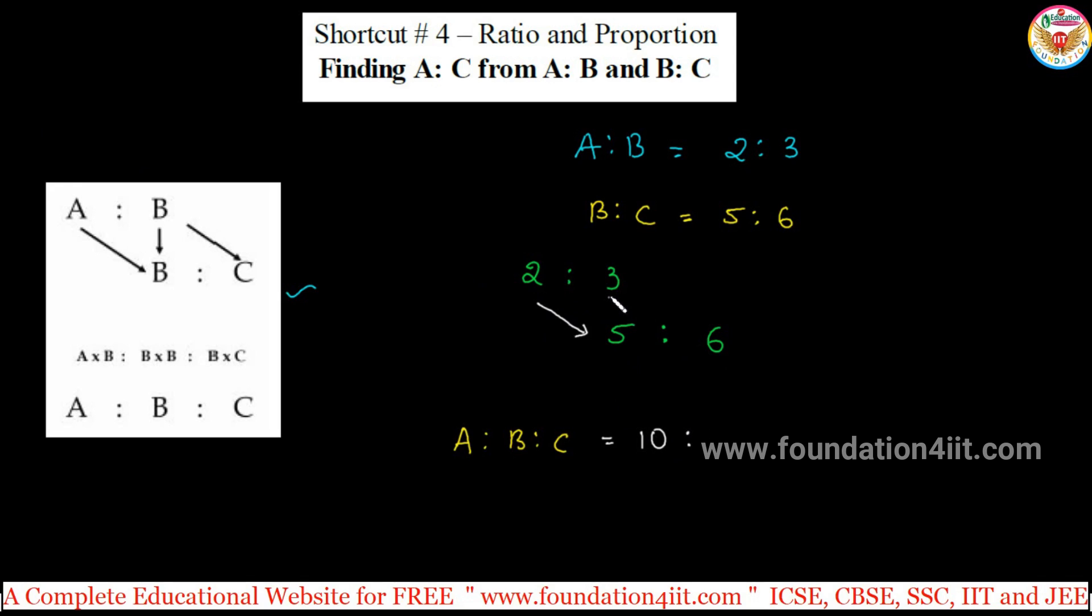Next, we will multiply 3 into 5, 15. Again, multiply 3 into 6, so 18, that is it. 10 is to 15 is to 18 is A is to B is to C.